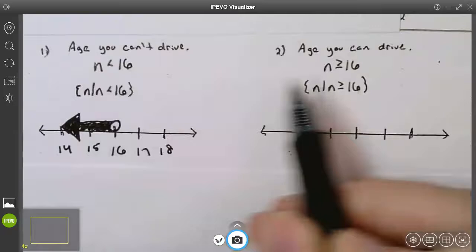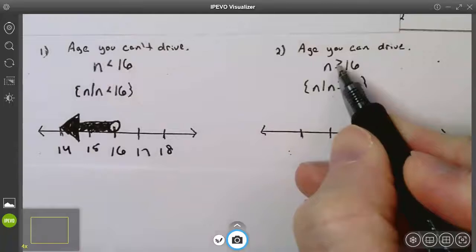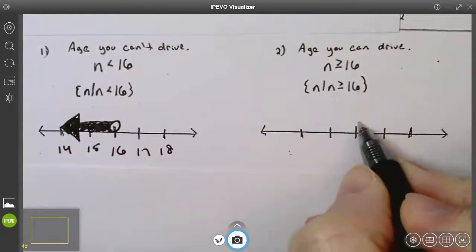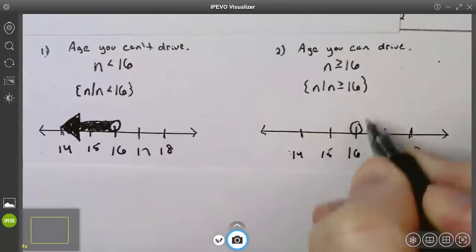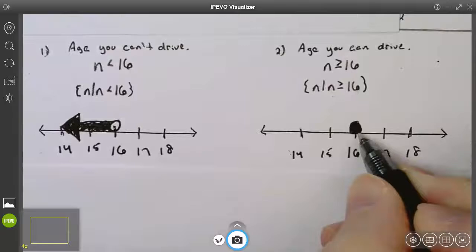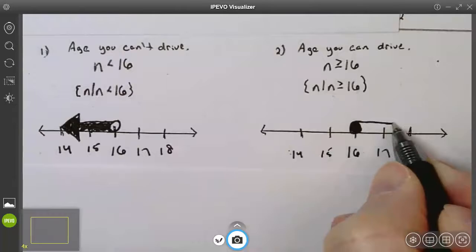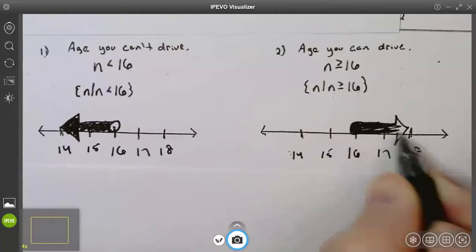Number two is the age you can drive. You cannot drive if you are less than 16; you can drive if you are equal to or greater than 16. So we use the inequality n ≥ 16. On the number line, we find 16 — this time it includes 16, so we color it in (closed circle), and the arrow goes to the right since the age you can drive can be 16 or any number greater.